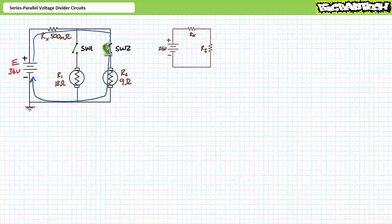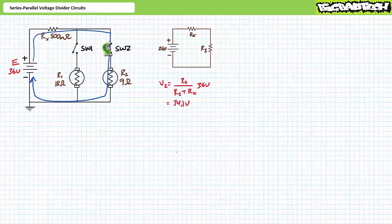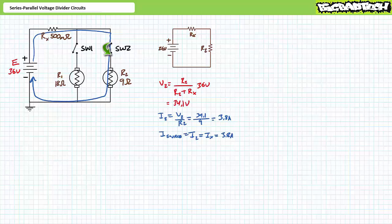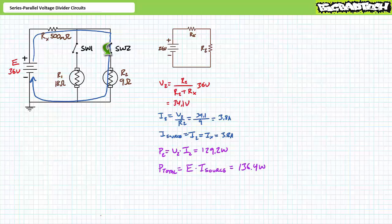Part two — switch one open, switch two closed. The closure of switch two places R2 perfectly in series with Rx. The voltage divider rule demonstrates V2 is 34.1 volts. Ohm's law demonstrates I2 is 3.8 amps. This is a pure series circuit, so source current equals I2 equals Ix equals 3.8 amps. P2 equals V2 times I2, demonstrating R2 consumes 129.2 watts. Total power is 136.4 watts, meaning Px is the remaining 7.2 watts, which might be considered a loss to this system.